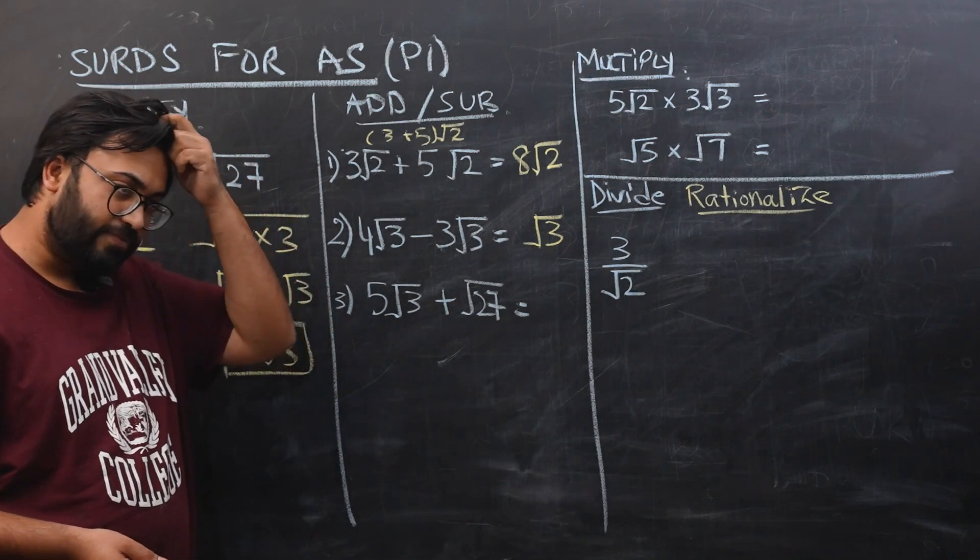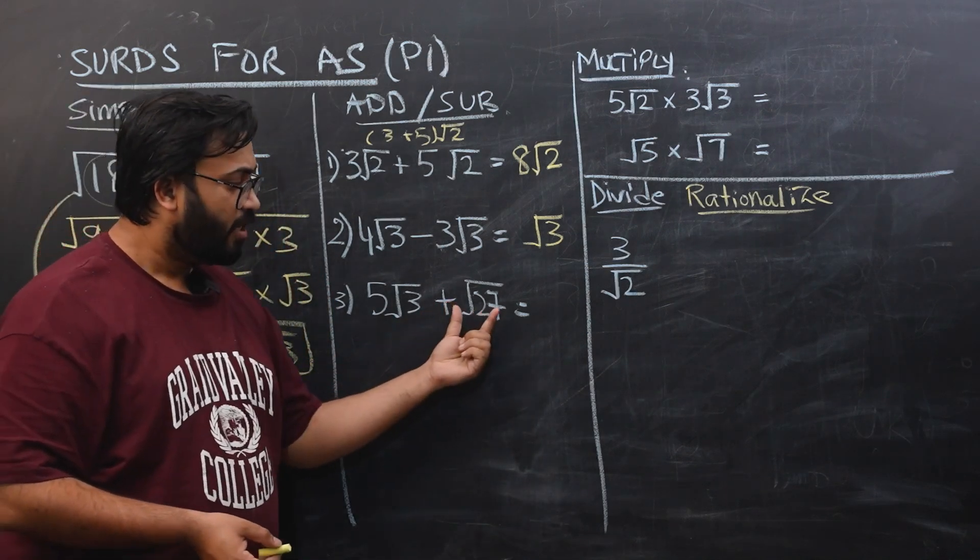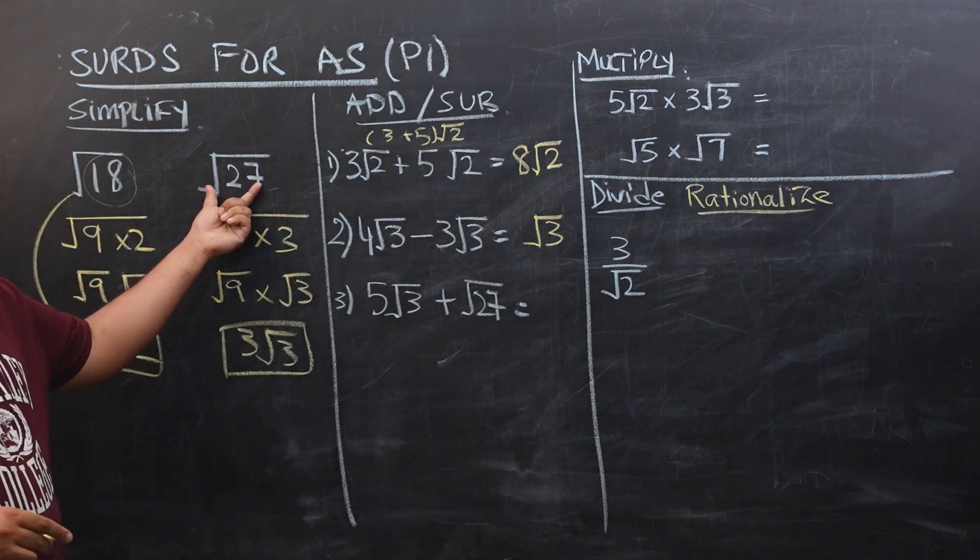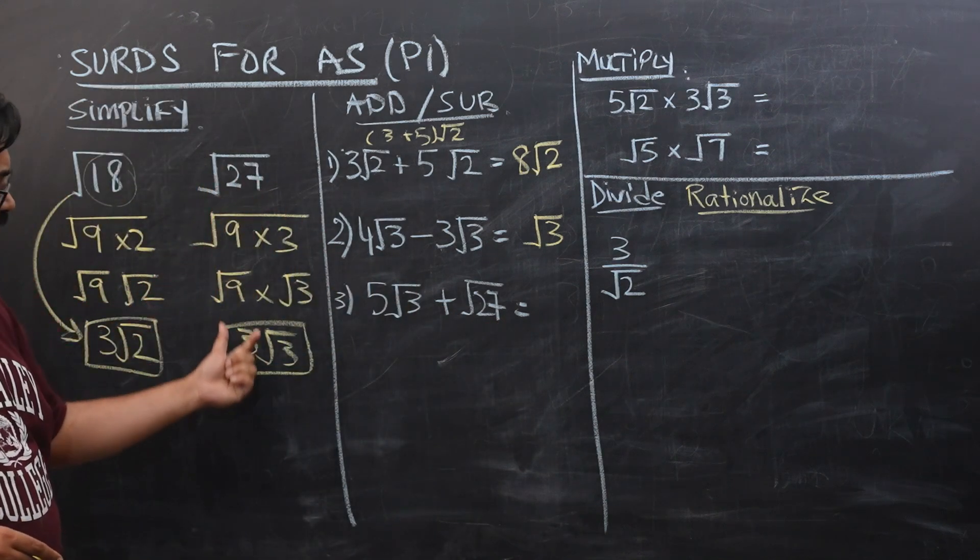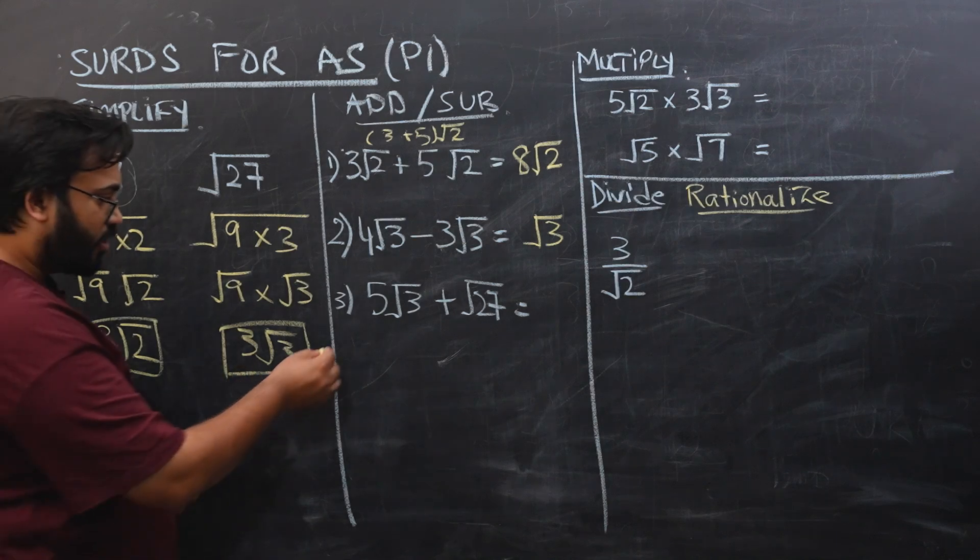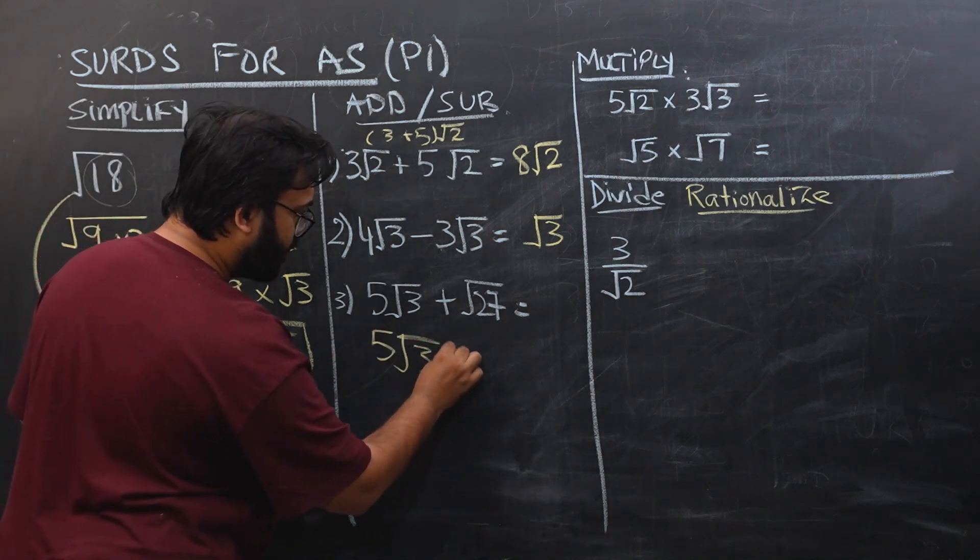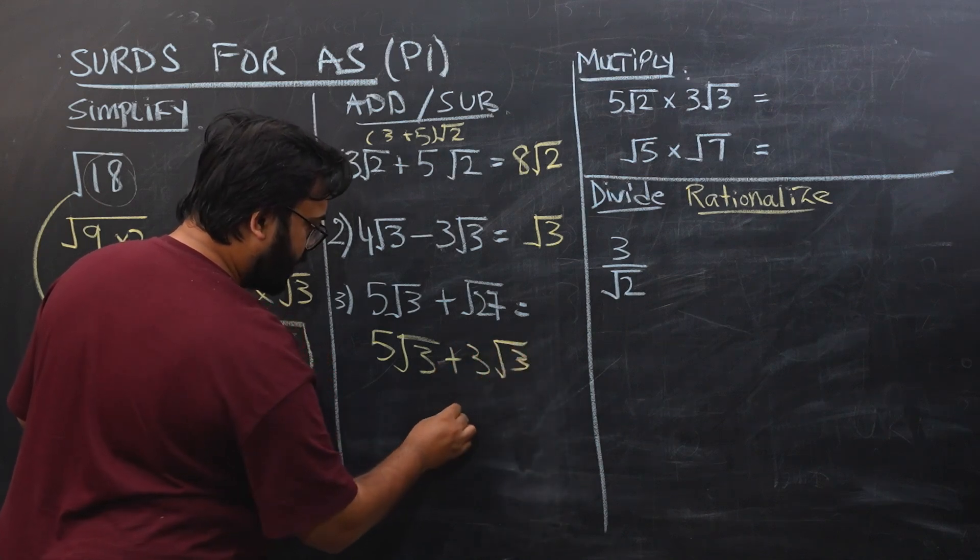We know this is under root 27. I just showed you that under root 27 can be simplified to 3 under root 3, so we can add them by using a tactic. 5 square root of 3 plus 3 square root of 3. Now we can see this is 8 square root of 3. So it's very easy, nothing difficult.